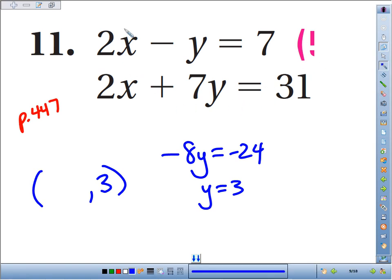I'm going to use the first equation. We've got 2x minus y, but y is 3, equals 7. Add 3 to both sides, we get 2x equals 10. Divide by 2, and we see that x is 5.